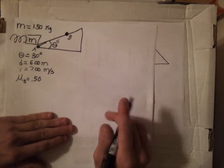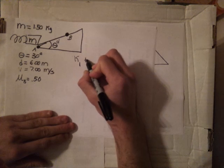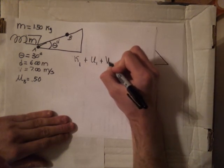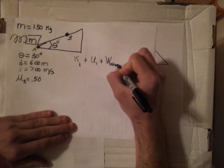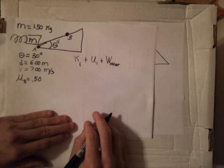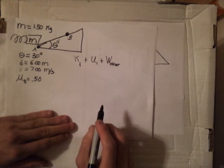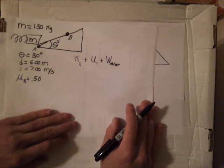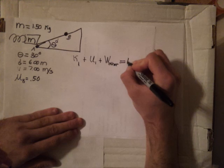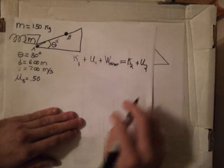The work-energy theorem tells us that the kinetic energy at point 1, plus the potential energy at point 1, plus the work done by anything other than conservative forces, equals the kinetic energy at point 2, plus the potential energy at point 2. A conservative force is one that does not depend on the path taken — kinetic friction is non-conservative, because if you take a different path, it will have a different quantity.